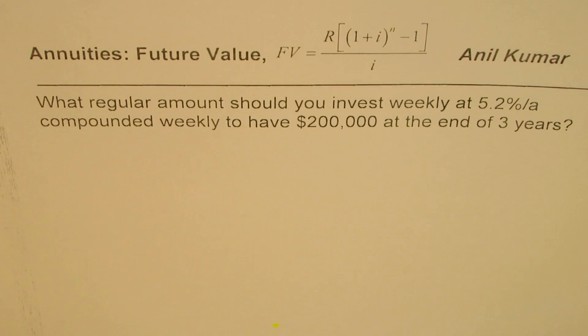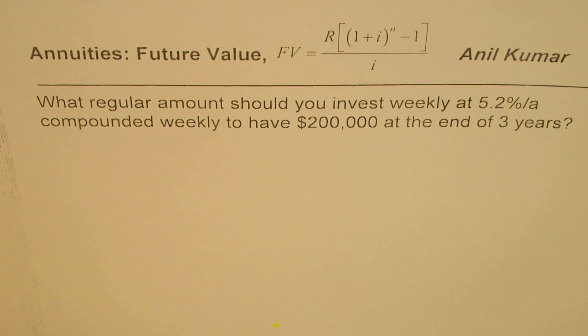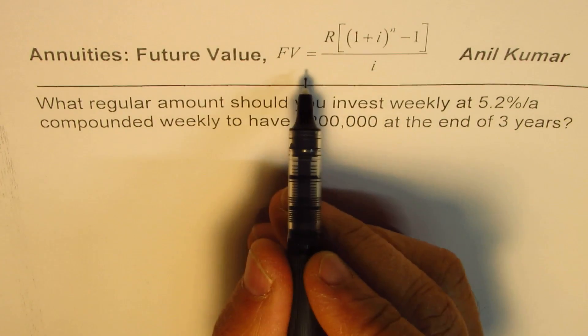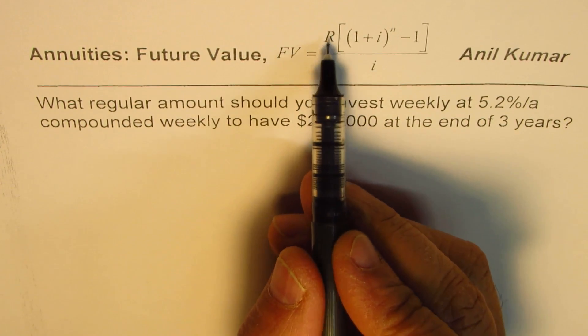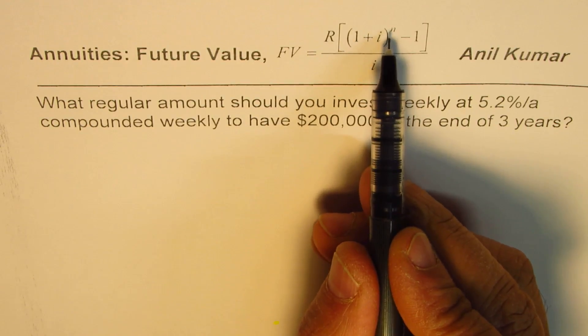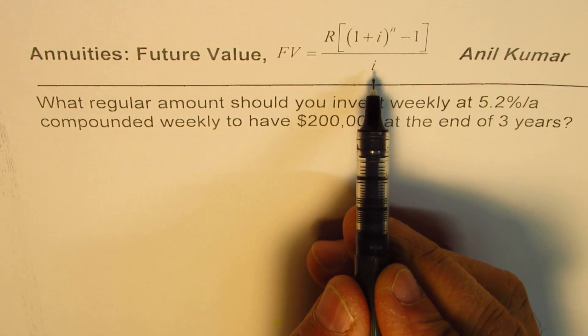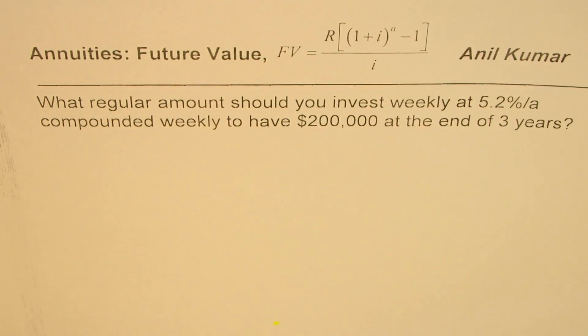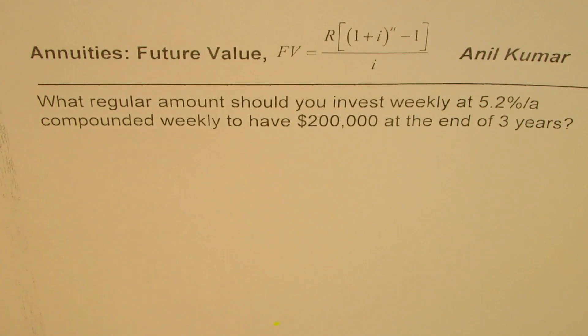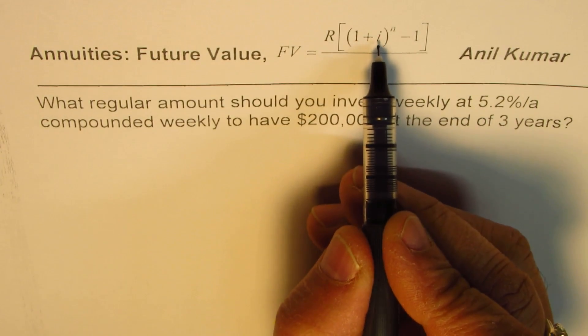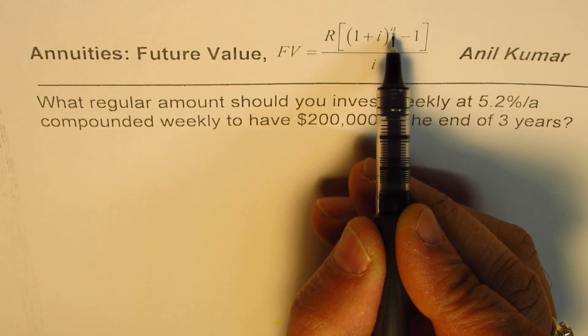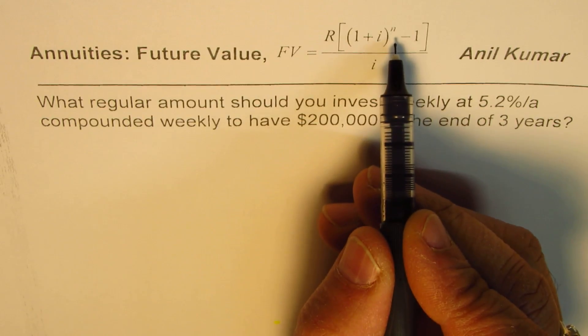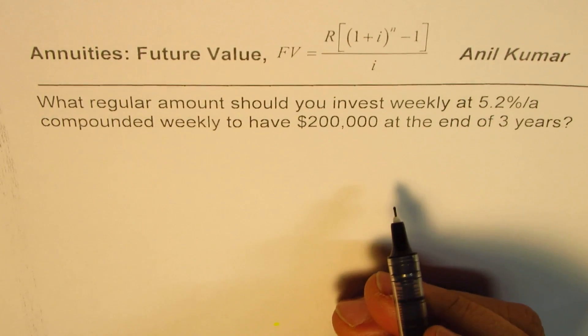I'm Adil Kumar. We are practicing how to calculate annuities, especially their future value. Here is the formula: Future value equals R times 1 plus I to the power of N minus 1 divided by I. R is the regular payments made at the end of compounding period. I is the interest for the compounding period. N is the number of times it is being compounded.